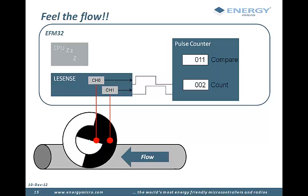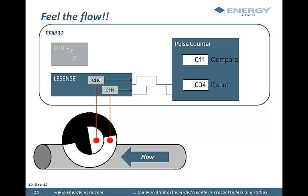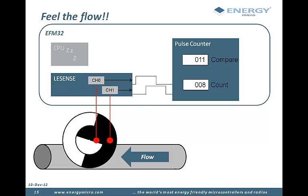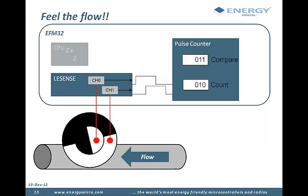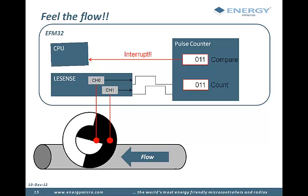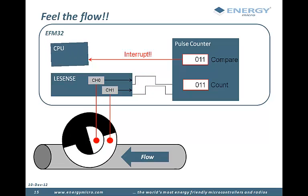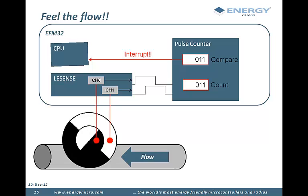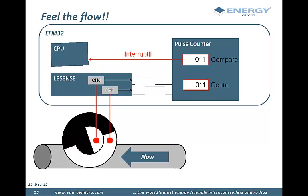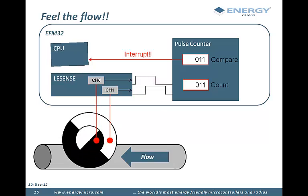The pulse counter can interpret the two Boolean values as a quadrature encoder signal and count rotations. An interrupt is issued only when a certain number of rotations has been counted. Everything that happens until the interrupt is issued happens in deep sleep with only microamps of current drawn by the EFM32.